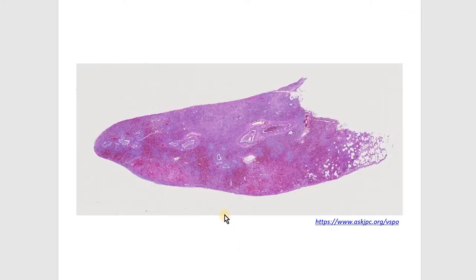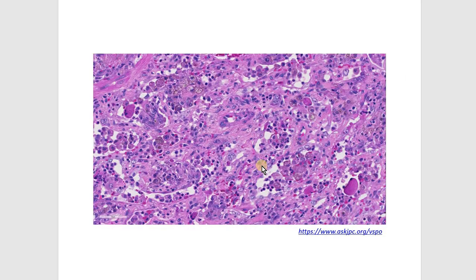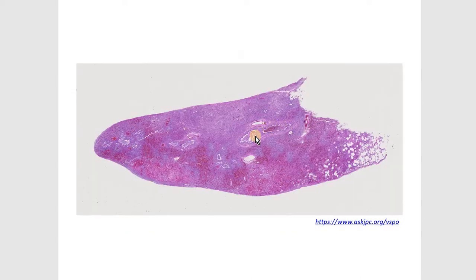If you remember, canine distemper causes diffuse bronchointerstitial pneumonia, affecting the majority of the tissue section. It is characterized by abundant hemorrhage, septal necrosis with alveolar architecture replaced by eosinophilic karyorrhectic and cellular debris that extends into the alveolar lumen and mixed with many neutrophils, alveolar macrophages, along with necrotic debris, fibrin, hemorrhage, and edema. Airway spaces as well contain hemorrhagic cellular exudate.